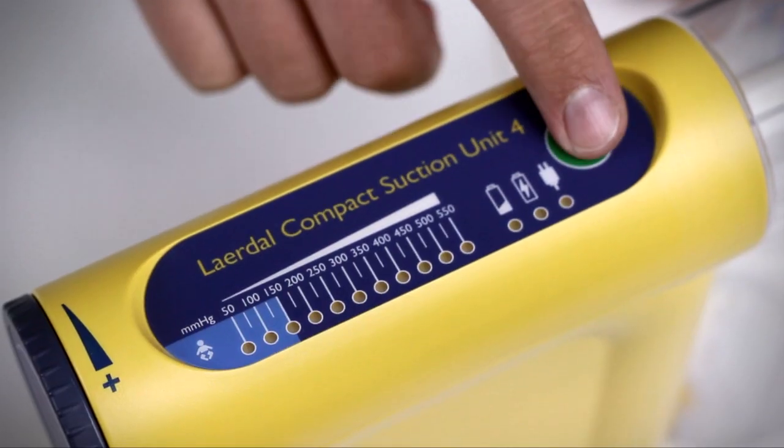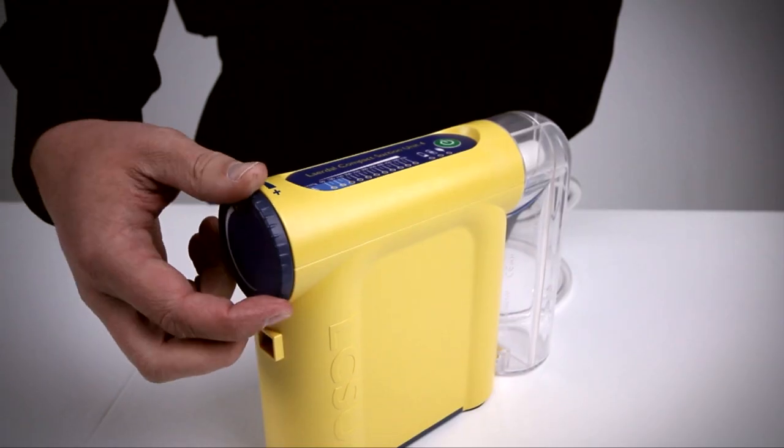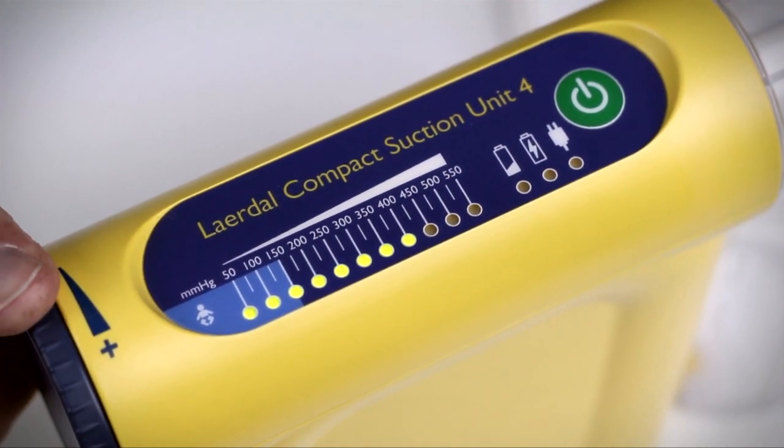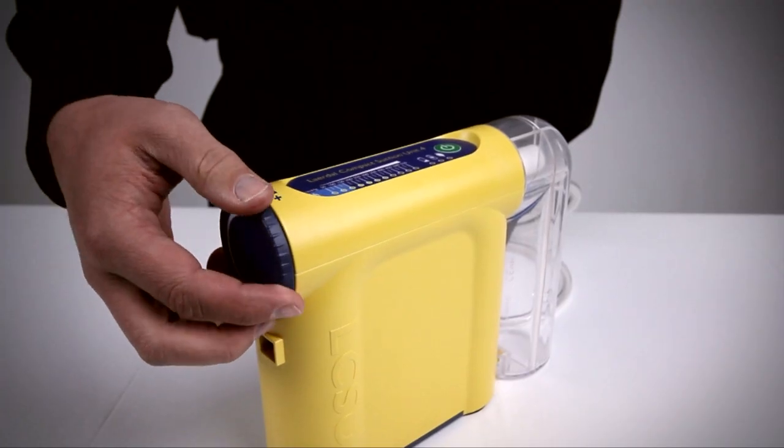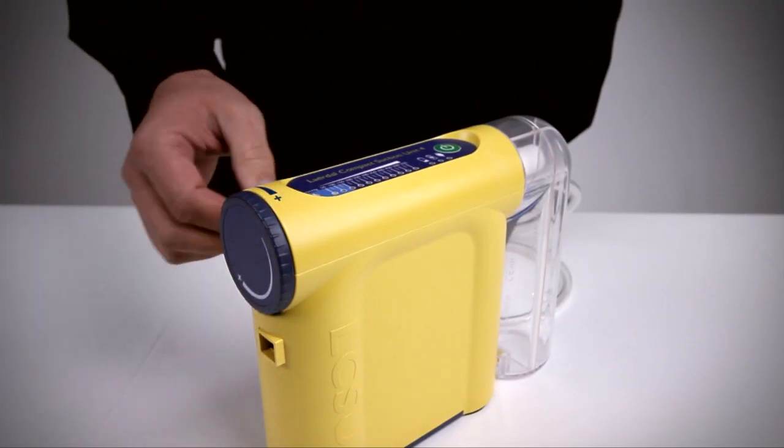Turn the unit on by pressing the green button. Turn the adjustable dial to set the vacuum level. The dial clicks when turned. The LED light enables you to view the display in day and night conditions.